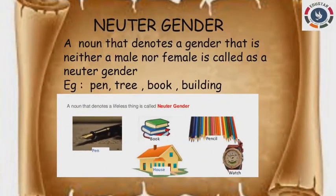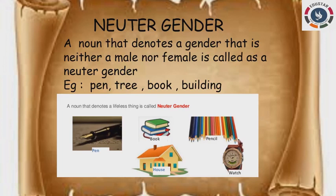The next gender is neuter gender. Neuter gender is nothing but it is a noun that denotes neither a male nor a female — it only represents non-living things or lifeless things, like pen, pencil, book, building, house, etc. All of these come under neuter gender.